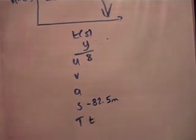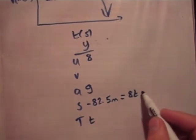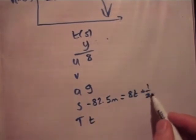The acceleration is g. So if we use the formula s equals ut plus a half at squared, we're going to get that this is equal to 8t plus a half gt squared.